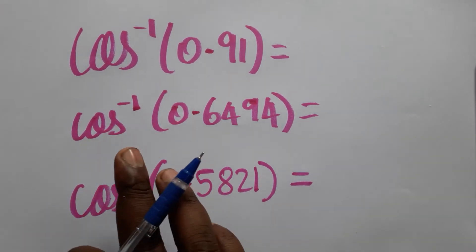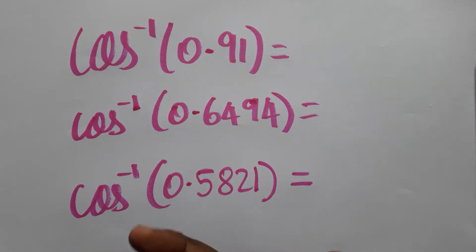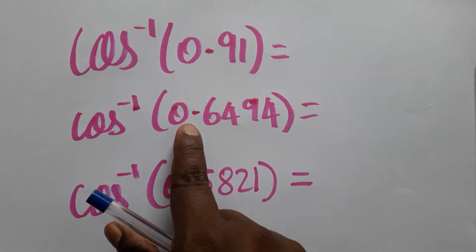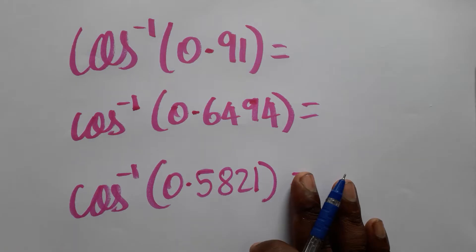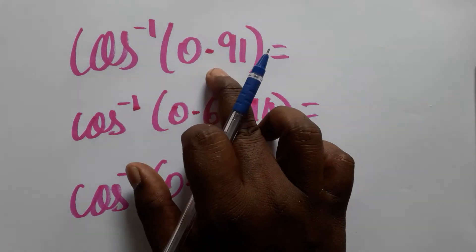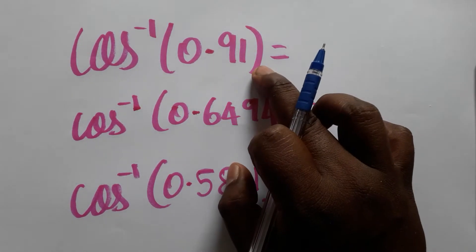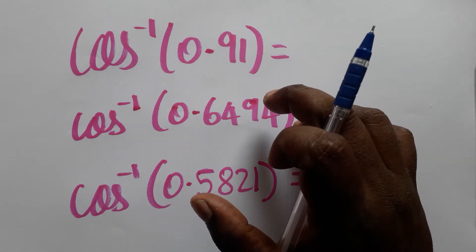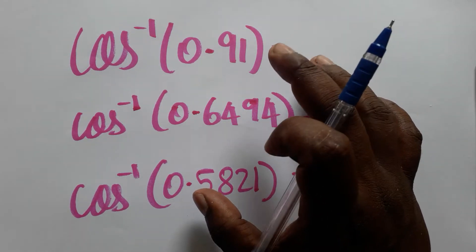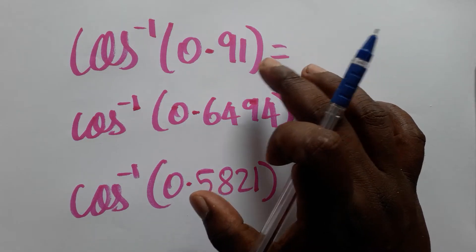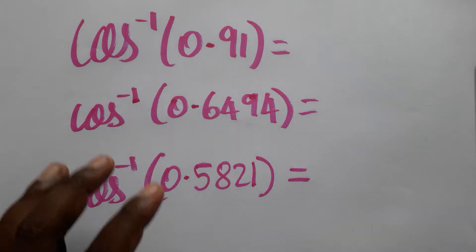Today we are going to find cosine inverse of different values: cosine inverse of 0.91, 0.6494, and 0.5821 — all given in radians, and we are finding how many degrees. Without using a calculator, I am going to teach you how to find the degree of cosine inverse using a logbook.